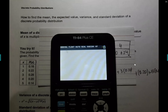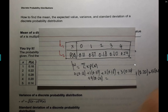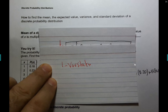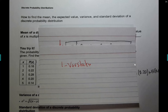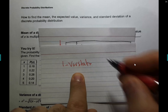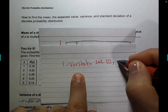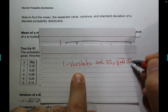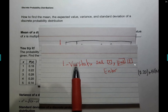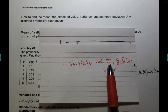For older TI-84 calculators that show only one variable stats without the list selection screen, here's what to do: go to STAT, CALC, one-variable statistics, then press the SECOND key and press 1 to get L1, then add a comma, then press SECOND and 2 to get L2, then press ENTER. That will give you the same weighted mean result.